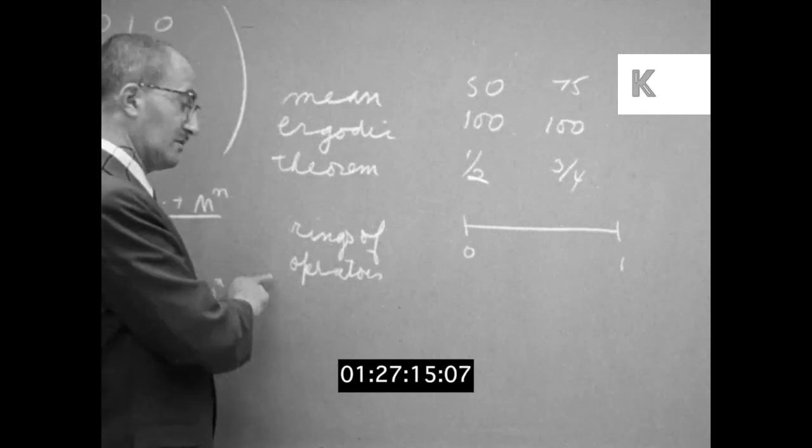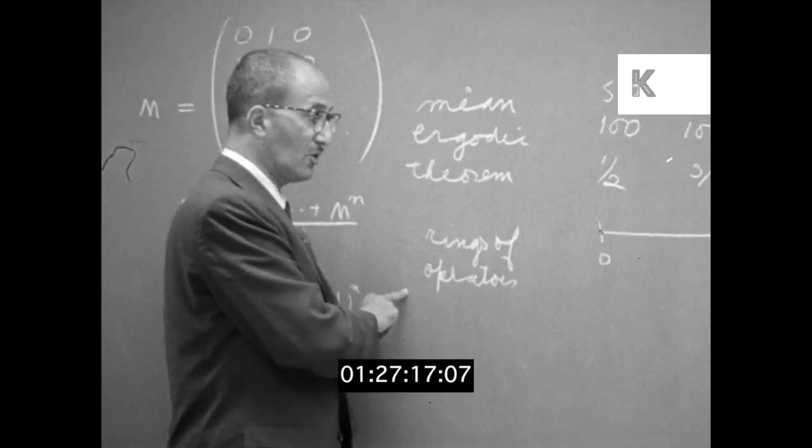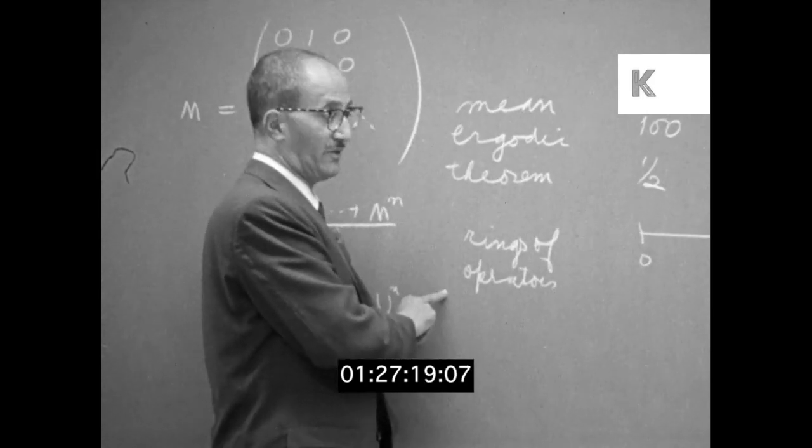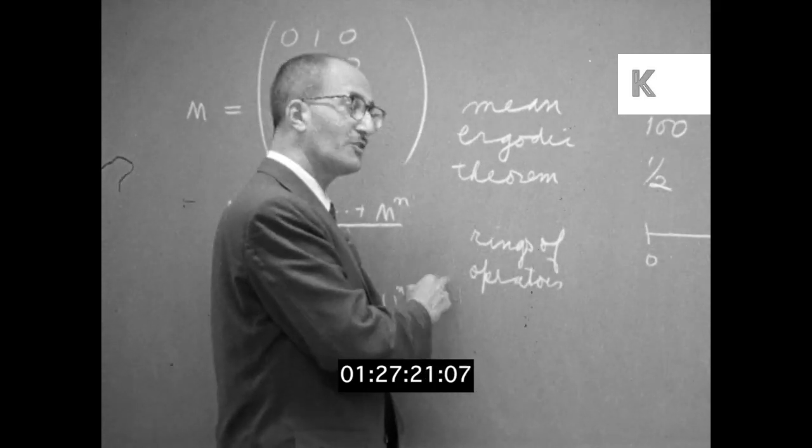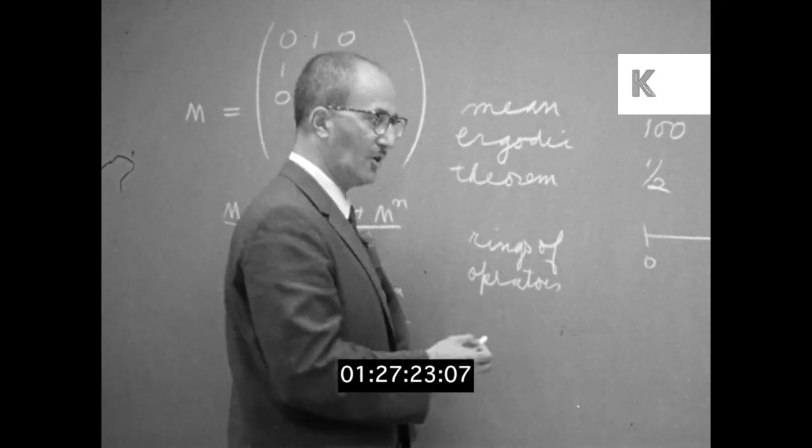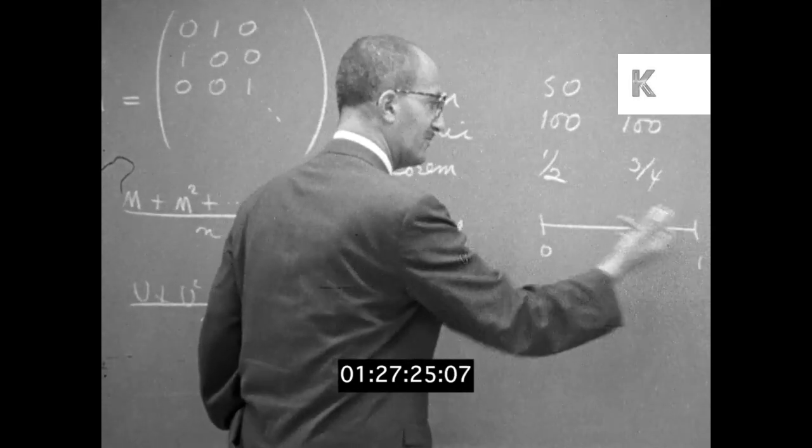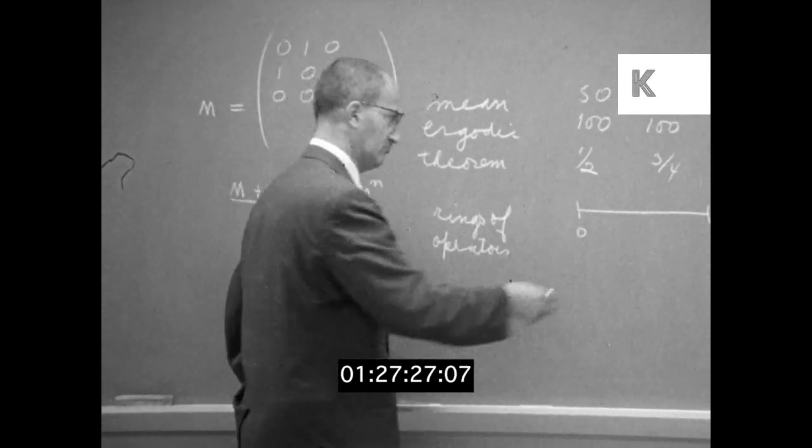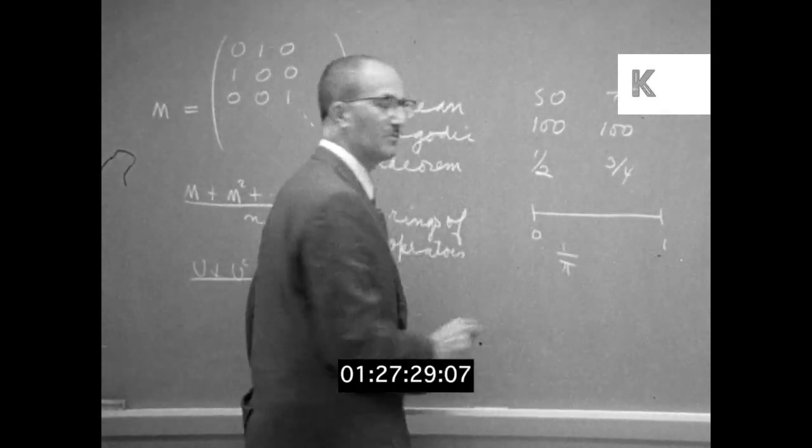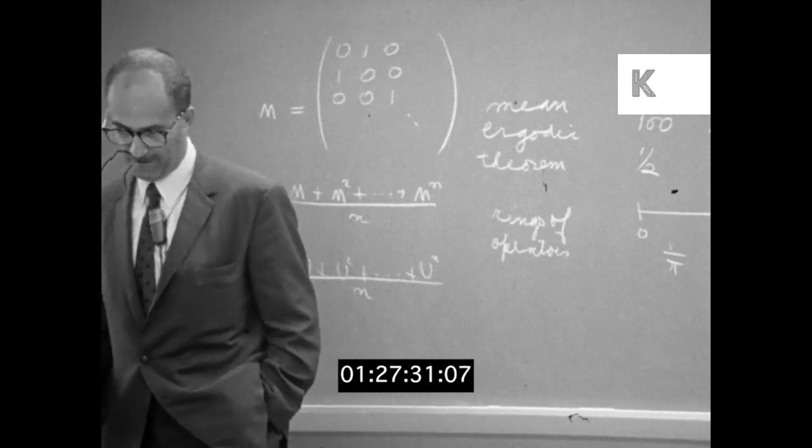In connection with various rings of operators, von Neumann introduced dimension functions in continuous geometries where the dimensions could take any value between zero and one, so it makes sense to speak of a subspace of dimension one over pi.